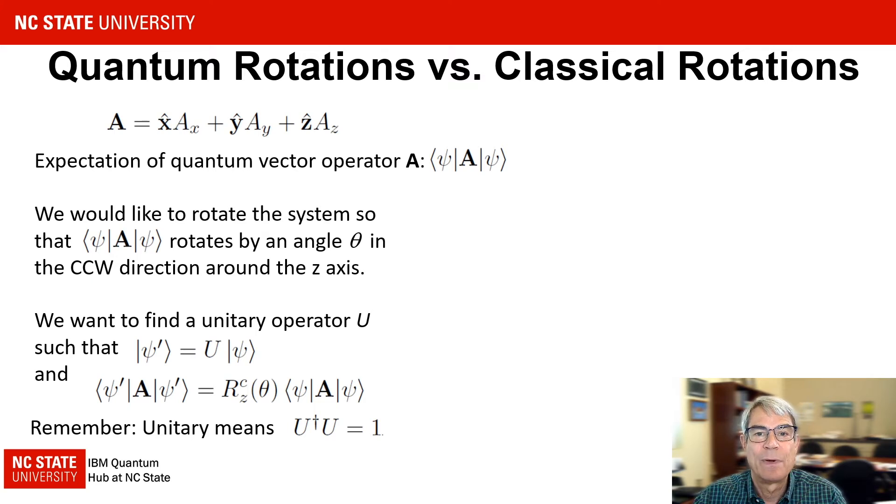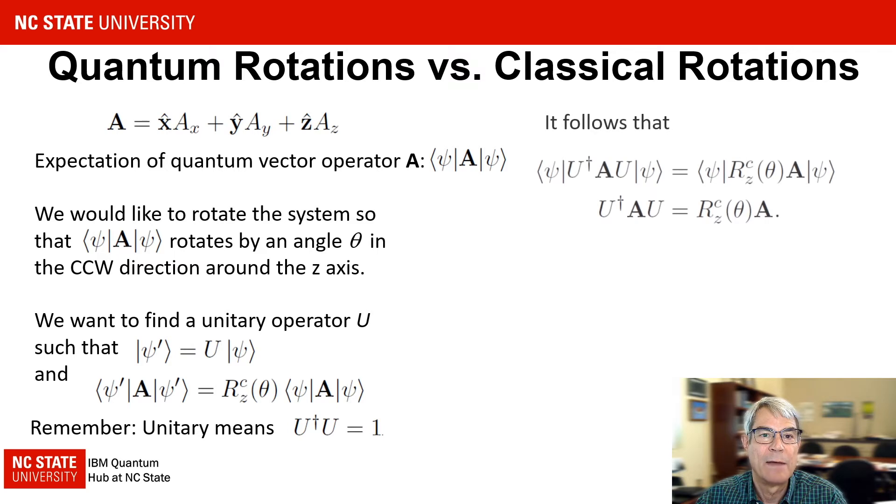Remember that a unitary operator is one for which the Hermitian conjugate is the inverse. That is, U dagger U equals 1. And the Hermitian conjugate is obtained by taking the transpose and then taking the complex conjugate of an operator.